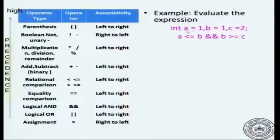Let us see a few more examples of expression evaluation and see what kind of expressions are allowed, what kind of errors do people usually make and so on. Let us say that we have given an expression: a equal to 1, b equal to 1, c equal to 2, and then we have an expression a less than or equal to b AND b greater than or equal to c. This is the expression that we want to see how it will be evaluated.